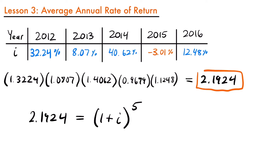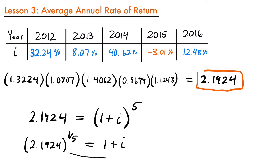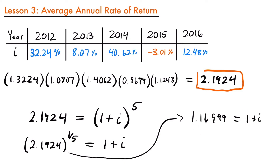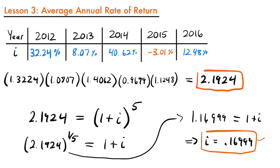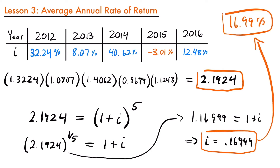To solve for i, we take the fifth root of each side of the equation. That gives us 2.1924 to the one-fifth power equals 1 + i. Putting this into the calculator gives 1.16999, so 1 + i = 1.16999. Subtracting one from each side, i equals 0.16999, or 16.99%. This is our average annual rate of return — over this five-year period, the average percentage earned is 16.99%, roughly 17%, taking each of those yearly rates into account.